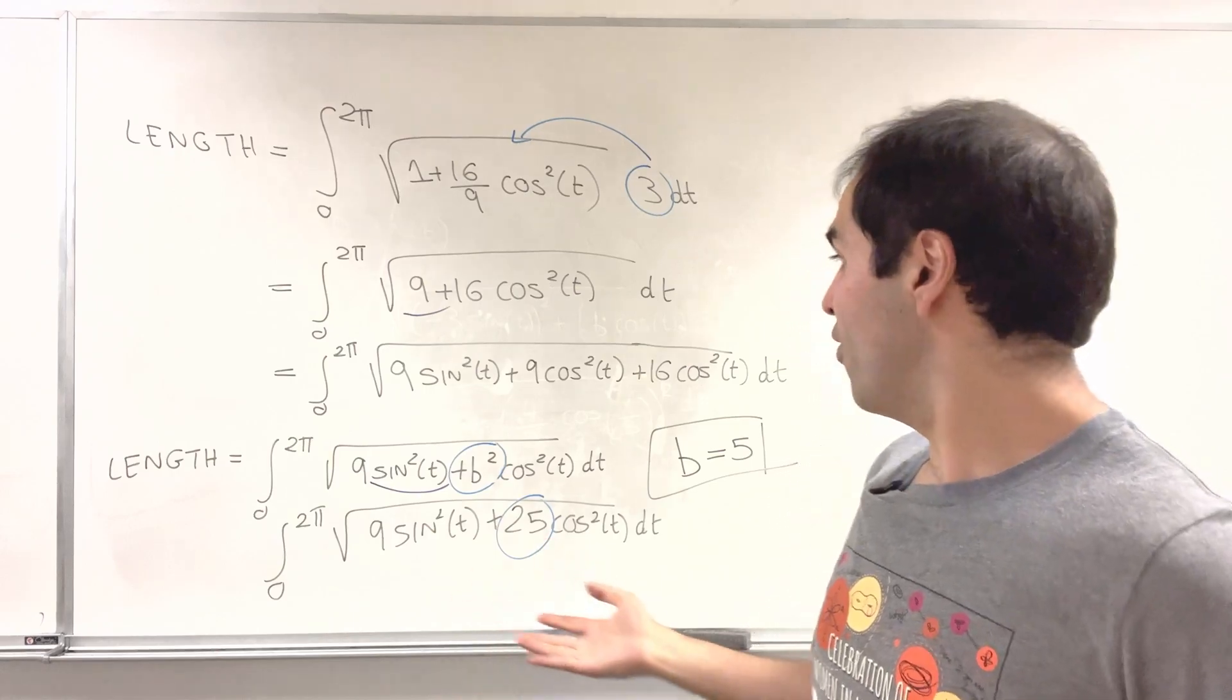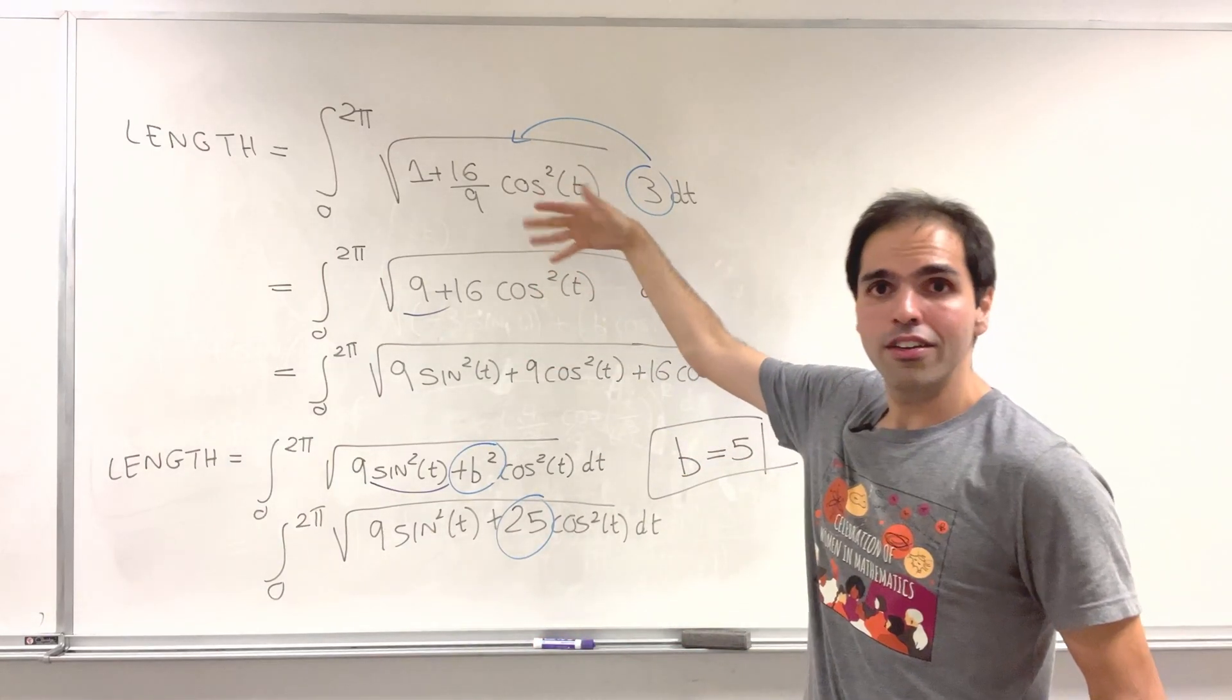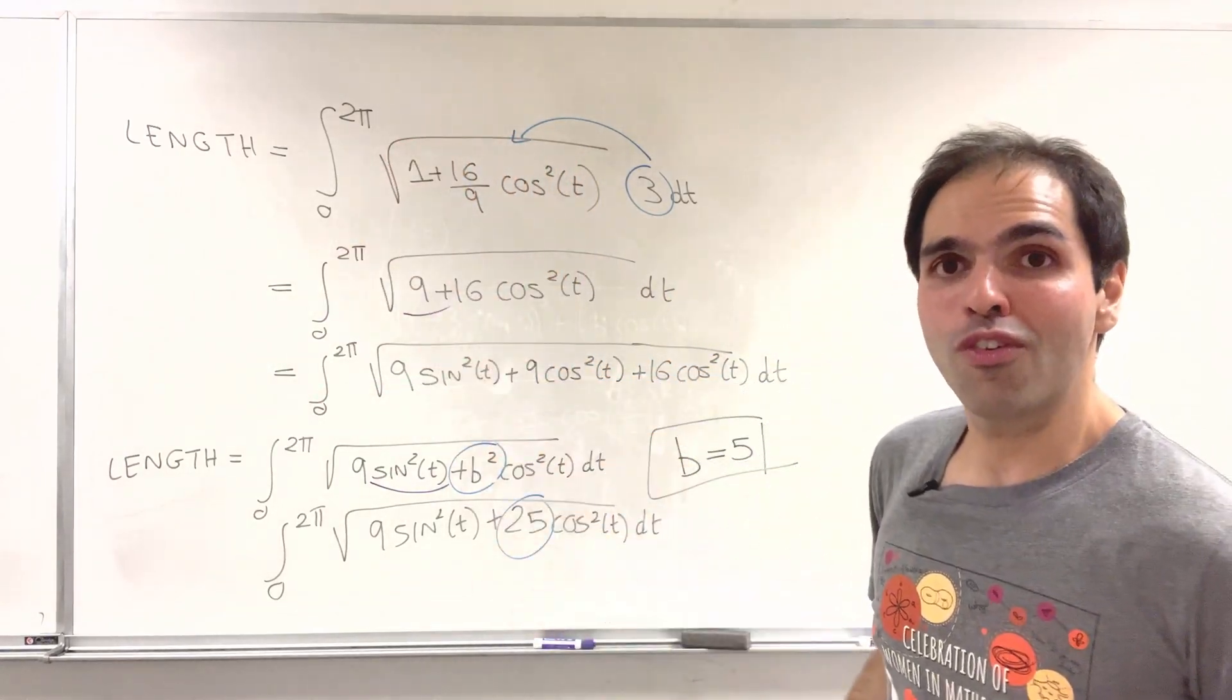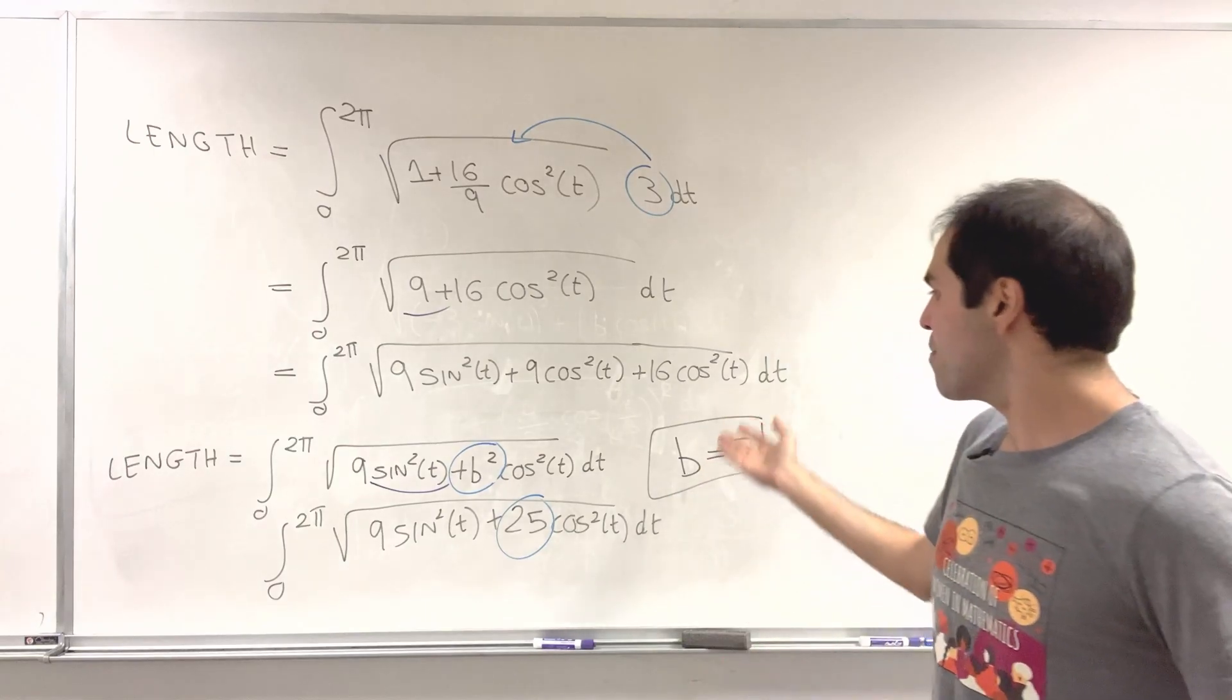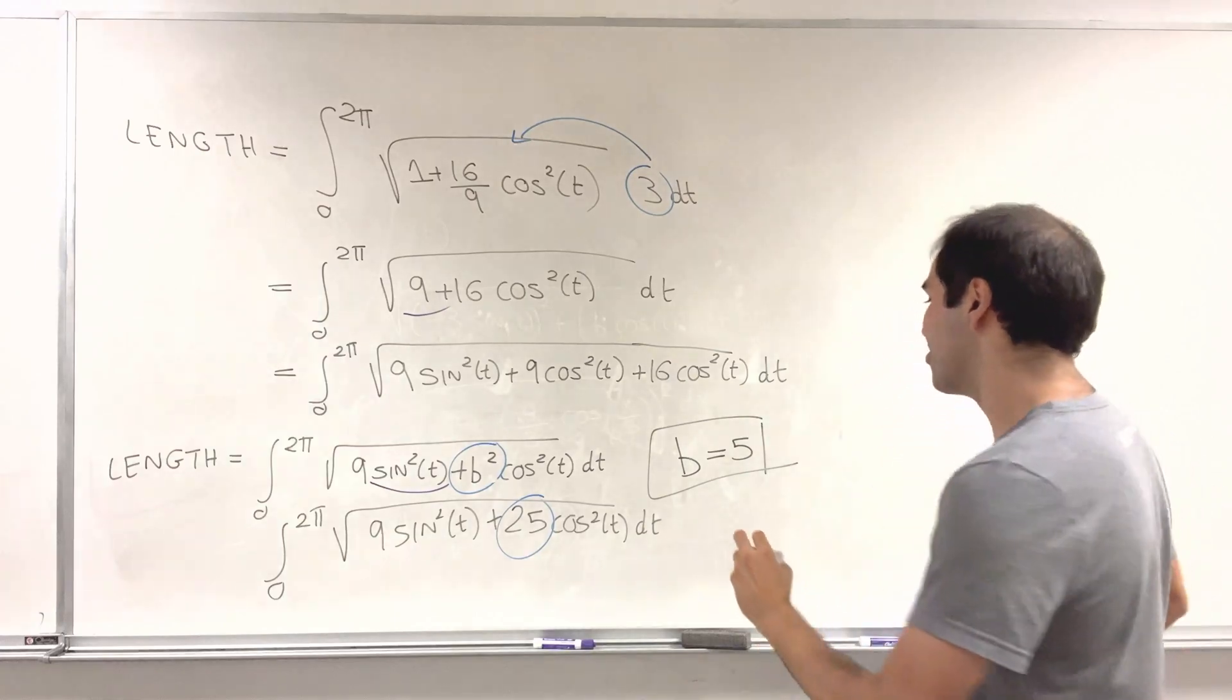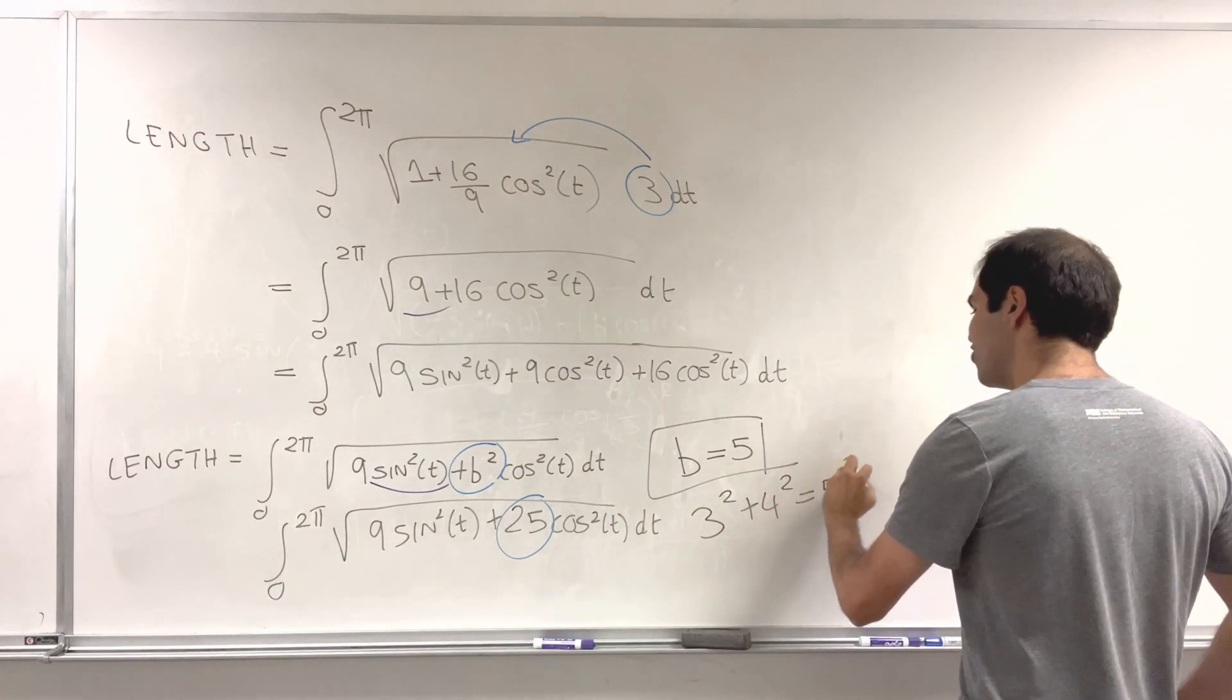And well, you may wonder, how are those 3 from sine of x over 3, the 4 for 4 sine of x over 3, and b related? Well, indeed, if you do 3 squared plus 4 squared equals 5 squared.